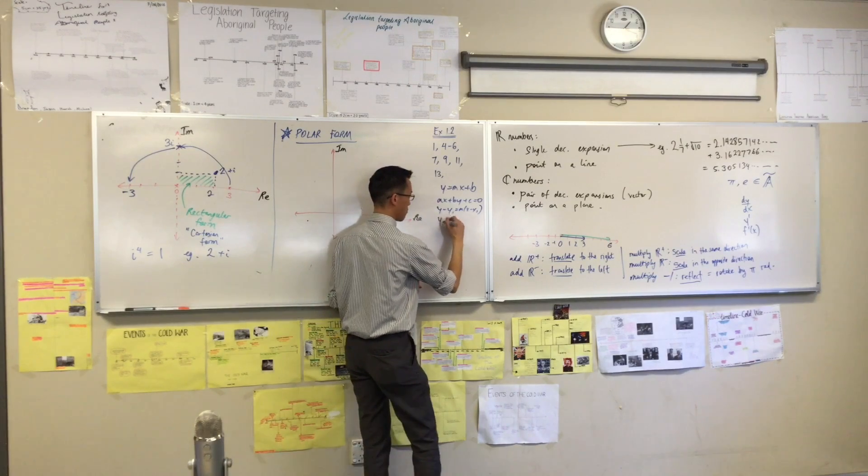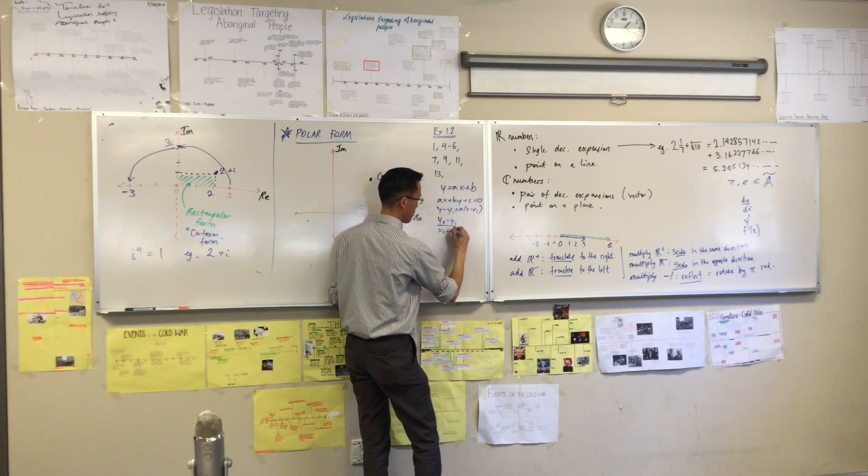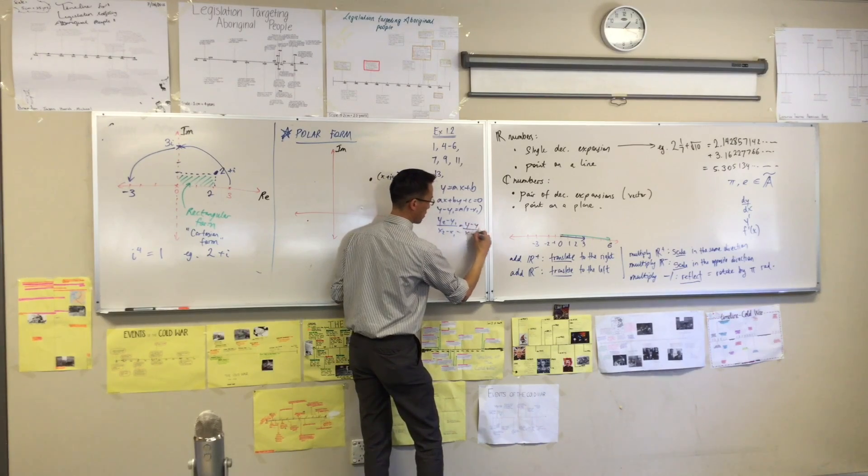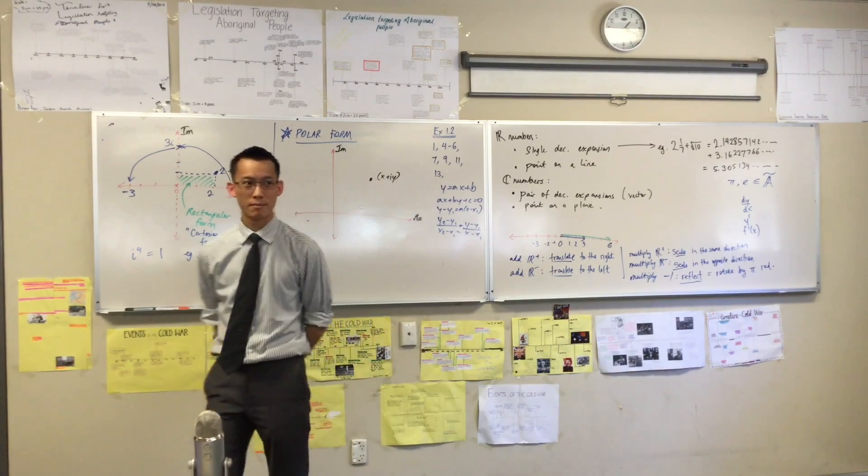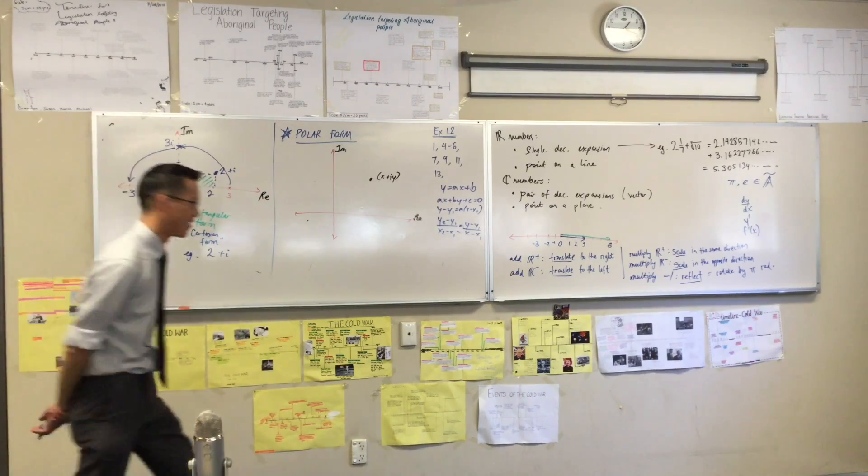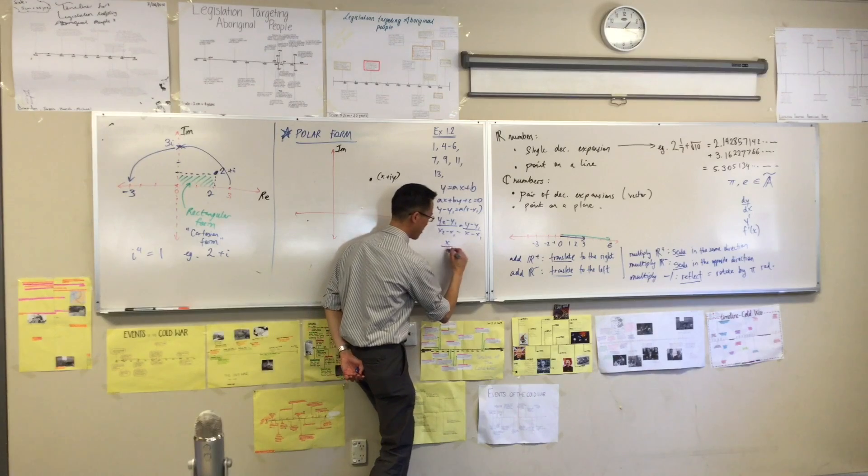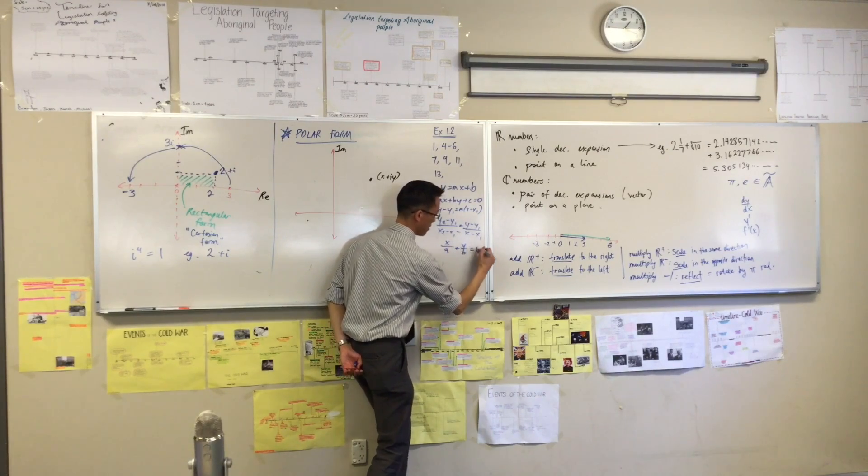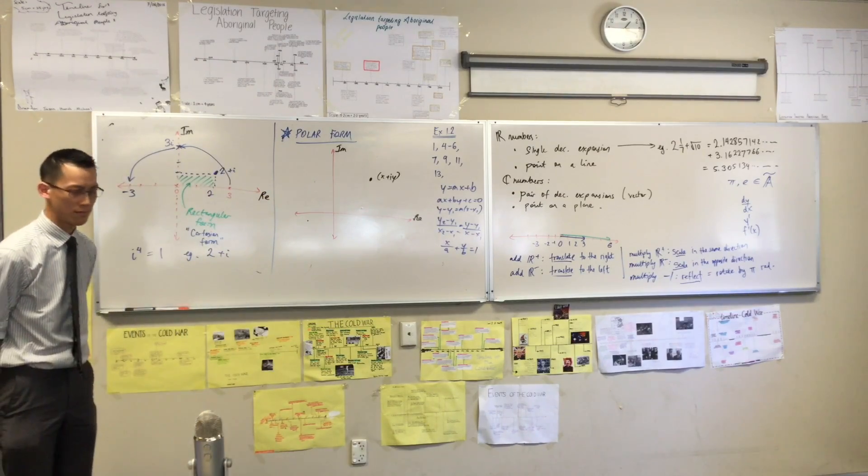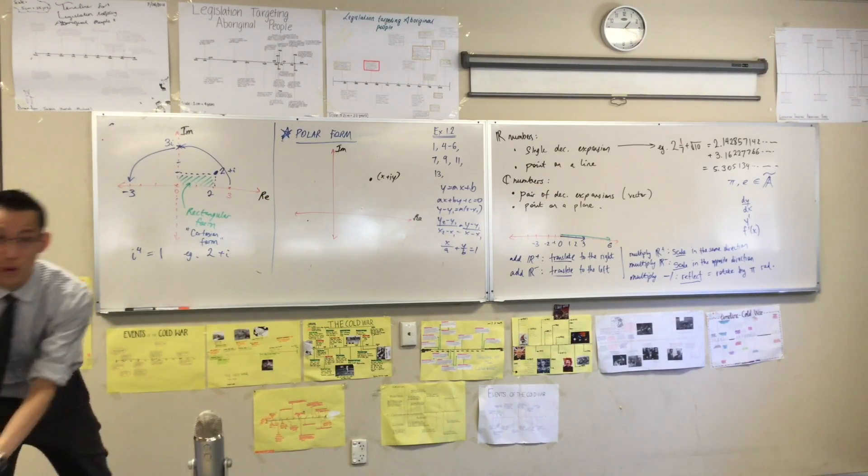Give me another one. Two point. Give me another one. What's this one called? Does anyone know what this one's called? Intercept form. This is intercept form, right?